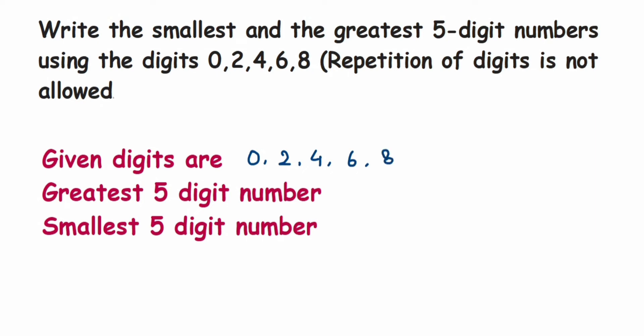Greatest five-digit number, how to write it down? It's very simple. Whenever you're writing a greatest number, you have to write down the greatest digit in the given numbers. So here the greatest number is 8, right? So I'm going to write down 8, that will be the first digit. After 8, second is 6, so write down 6.